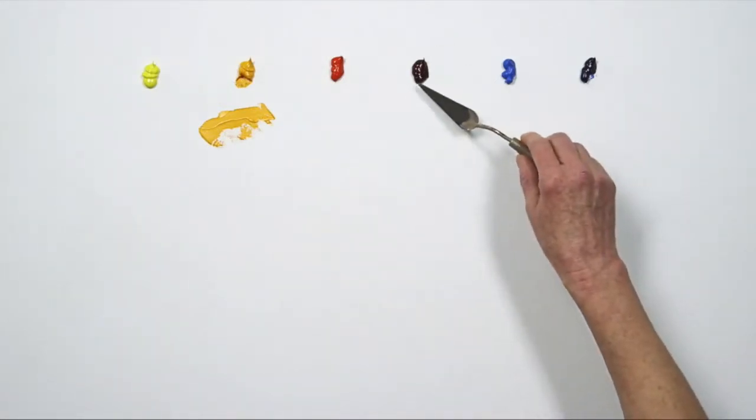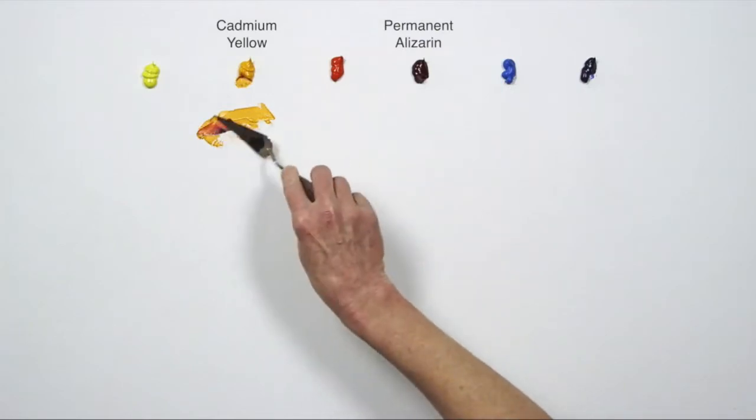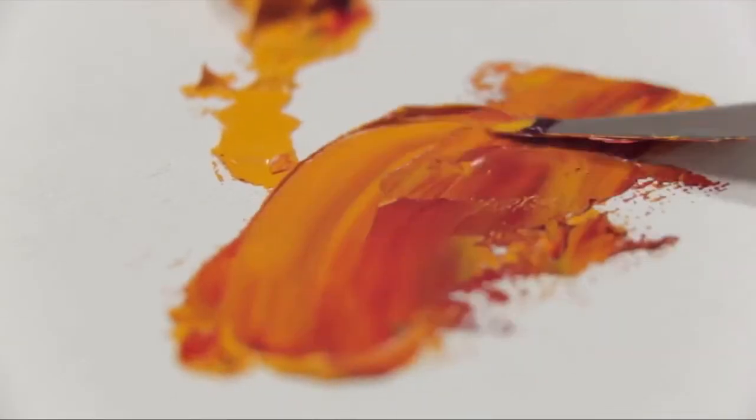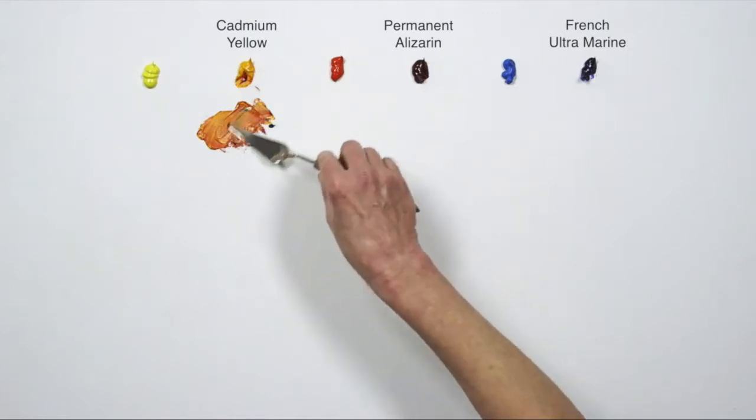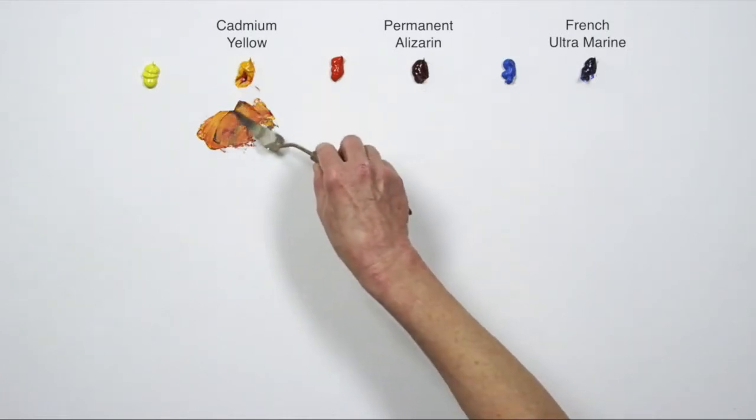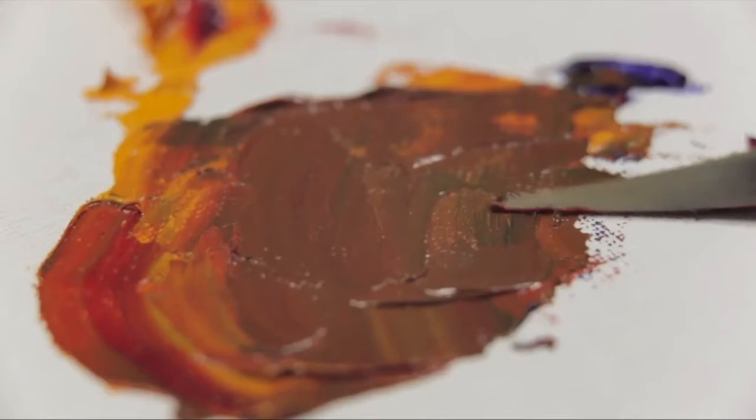This mixture is cadmium yellow plus permanent alizarin, and I'm adding ultramarine. You can see that I get a rich, dark brown.